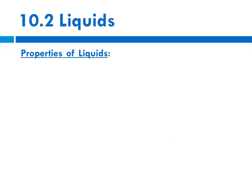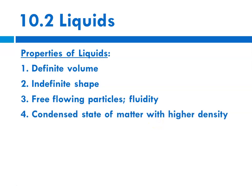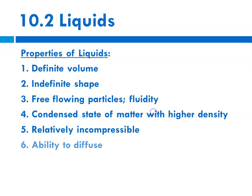When we think about liquids, we think about things we learned in elementary school. Liquids have a definite volume and an indefinite shape. Their particles are free-flowing, so they exhibit fluidity. They are a condensed state of matter compared to gases and have a higher density. They are relatively incompressible — that means you can't squish them in general. They have the ability to diffuse fairly readily, and they exhibit surface tension.